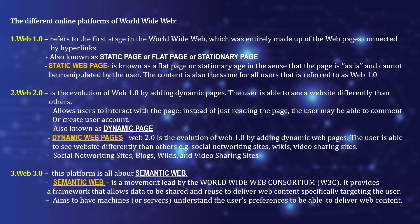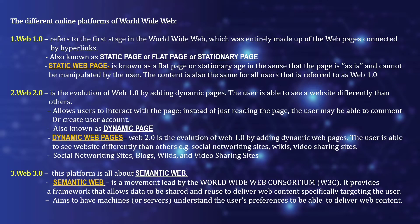Web 2.0 is the evolution of Web 1.0. Here you can now create an account and are able to comment or share information. Web 2.0 adds dynamic pages — the user is able to see a website differently than others, and can interact with the page instead of just reading it. Users may comment or create user accounts. Web 2.0, also known as the dynamic page, includes examples such as social networking sites, blogs, wikis, and video sharing sites.